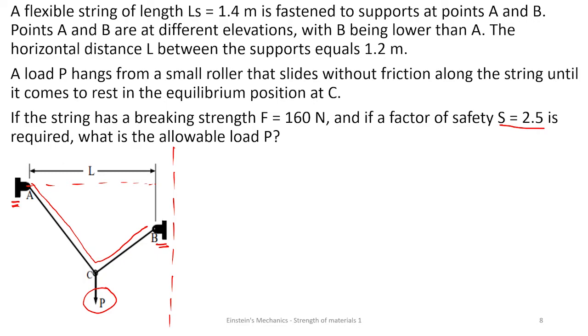Let's write down our parameters. First, we saw that the string has a length LS as 1.4 meters. There is a breaking force F as 160 Newtons. The distance between point A to point B is given as L which is 1.2 meters. The 1.2 is different from the 1.4. The 1.4 is the entire length of this string, meaning from A to point C back to point B. The 1.2 is just the distance between the supports.